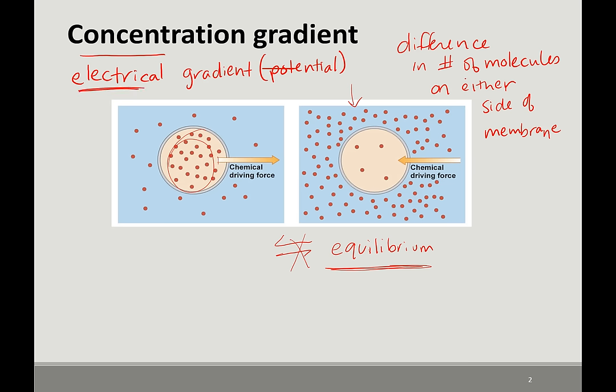An electrical gradient means molecules have some kind of charge — a plus or minus charge — and that also affects the driving force for moving those chemicals from one side of the membrane to the other. In the last slide of this lecture, we will talk about how you calculate the effects of these gradients on transport — whether it's going to take energy or not — and that will be delta G.